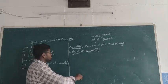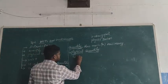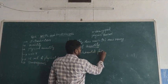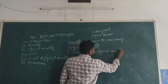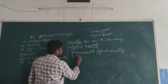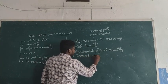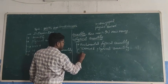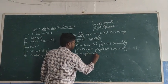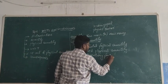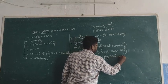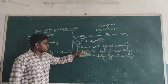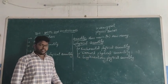These physical quantities are divided into three types. The first one is fundamental physical quantity, the second one is derived physical quantity, and the third one is supplementary physical quantity.